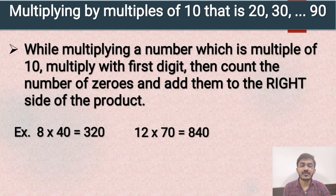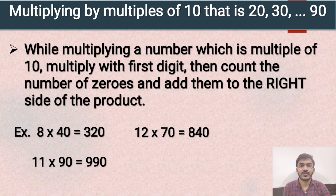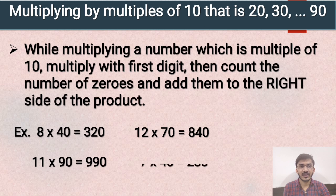Second example: 12 multiplied by 70 — we multiply 12 with 7 only. So 12 sevens are 84, and we add one zero at the end. So the answer will be 840. Third example: 11 multiplied by 90 — 11 nines are 99, and we add one zero at the end. Next example: 7 multiplied by 40 — 7 fours are 28, and we add one zero at the end. So the answer will be 280.